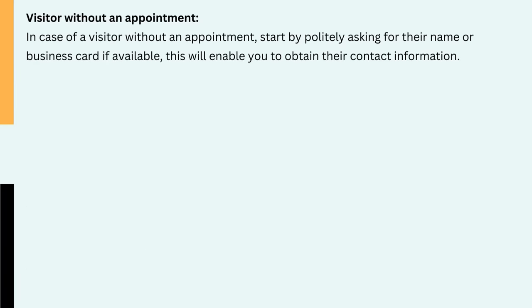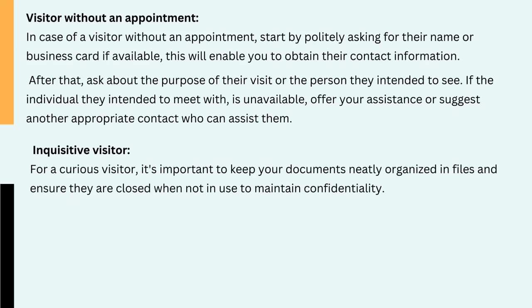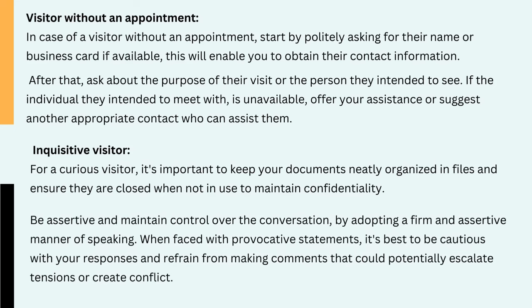2. Visitor without an appointment. In case of a visitor without an appointment, start by politely asking for their name or business card if available; this will enable you to obtain their contact information. After that, ask about the purpose of their visit or the person they intended to see. If the individual they intended to meet with is unavailable, offer your assistance or suggest another appropriate contact who can assist them. 3. Inquisitive visitor. For a curious visitor, it's important to keep your documents neatly organized in files and ensure they are closed when not in use to maintain confidentiality. Be assertive and maintain control over the conversation by adopting a firm and assertive manner of speaking. When faced with provocative statements, it's best to be cautious with your responses and refrain from making comments that could potentially escalate tensions or create conflict.